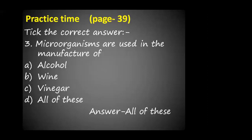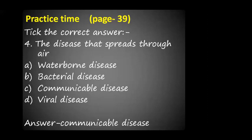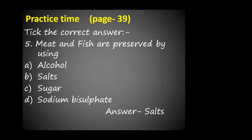Third: microorganisms are used in the manufacture of alcohol, wine, vinegar, or all of these. The answer is D, all of these. Question number 4: the disease that spreads through air — the options are waterborne disease, bacterial disease, communicable disease, or viral disease. The answer is C, communicable disease. Question number 5: meat and fish are preserved by using alcohol, salts, sugar, or sodium bisulfate. The answer is B, salts.